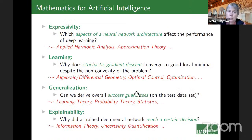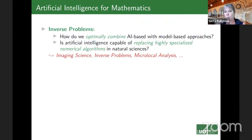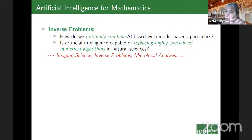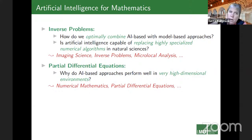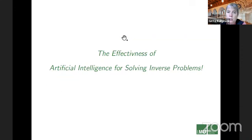Those are key directions in mathematics for artificial intelligence. Now I turn to the opposite direction: artificial intelligence for mathematics, more closely related to this session. One direction is inverse problems, asking how to optimally combine AI-based with model-based approaches, and whether AI could eventually replace numerical algorithms altogether. For partial differential equations the question is slightly different: what about the high-dimensional regime, and why do these algorithms perform so well there?